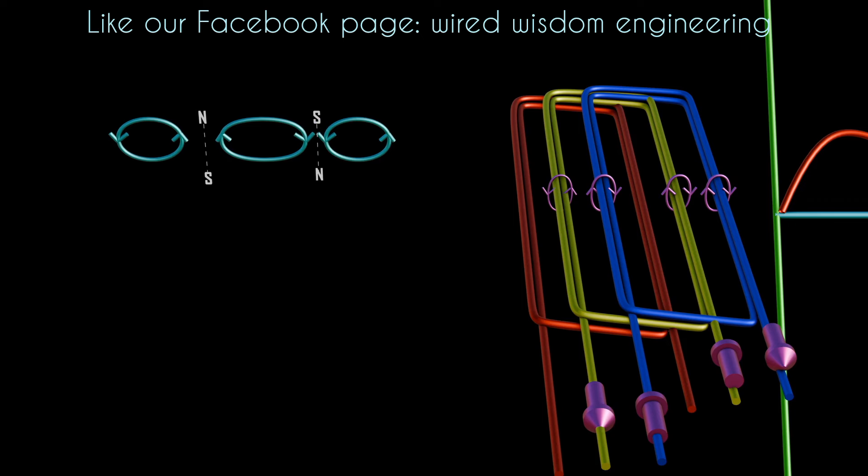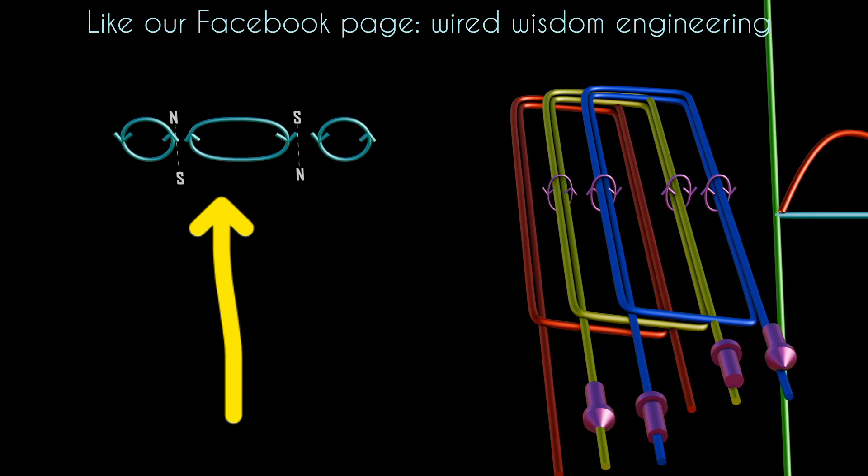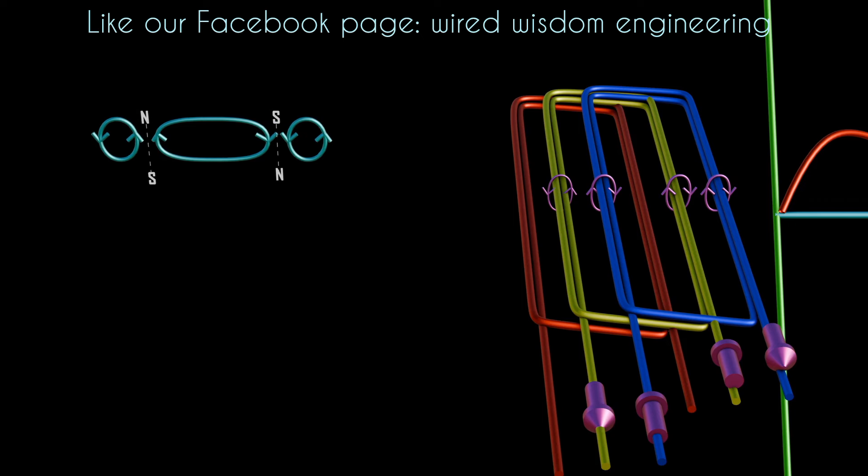Therefore, we can clearly see that a linearly moving magnetic field is formed within the induced magnetic fields by the three-phase supply in the coils.